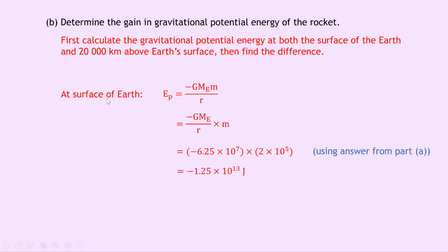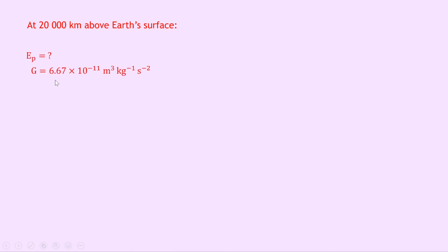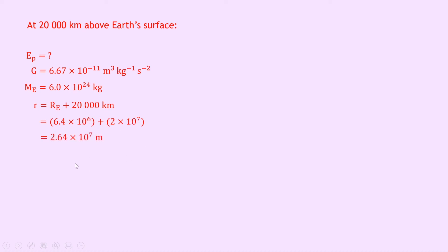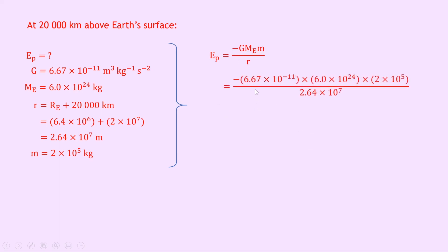We're not finished though. We need to do the same for 20,000 kilometers above the Earth's surface, then subtract. The distance R equals the radius of the Earth plus 20,000 kilometers: 6.4 times 10 to the 6 plus 2 times 10 to the 7, giving 2.64 times 10 to the 7 meters. The mass of the rocket is 2 times 10 to the 5 kilograms. So EP equals minus GME times M over R: minus 6.67 times 10 to the minus 11 times 6.0 times 10 to the 24 times 2 times 10 to the 5 divided by 2.64 times 10 to the 7, giving minus 3.03 times 10 to the 12 joules.